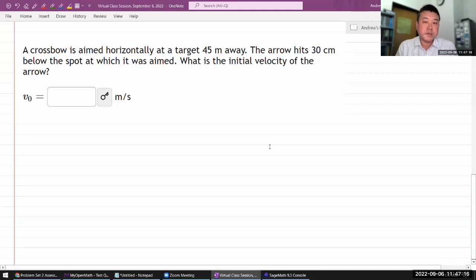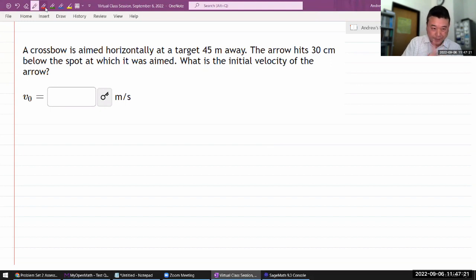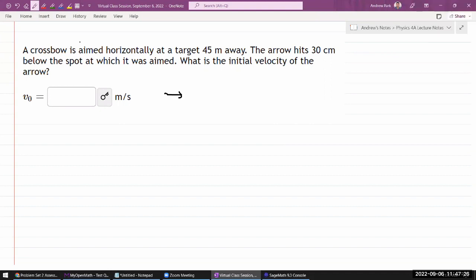This question says a crossbow is aimed horizontally. Let me start doodling because that's my way of making sure I'm getting all the information presented in the question. It says it's aimed horizontally, so my initial velocity is going to be horizontal. It's telling me how far away the target is, distance D.